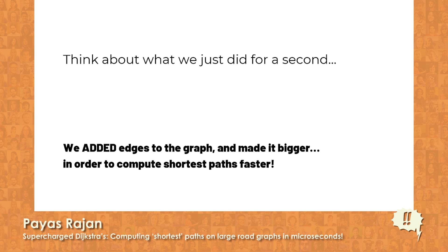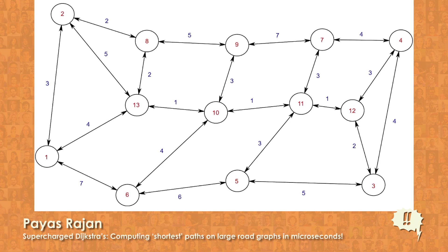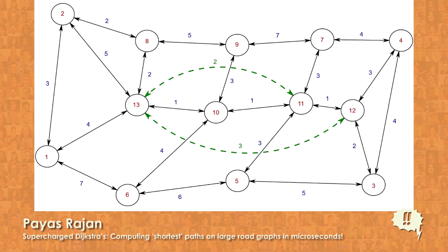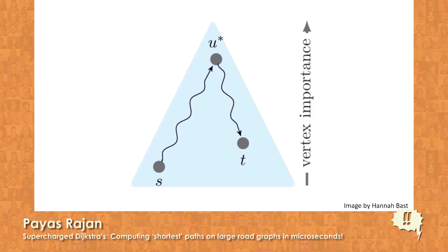We added edges to the graph and made it bigger in order to compute shortest paths faster. In our running example, the red numbers are the ranks — the order in which vertices are contracted. Running the contraction algorithm on this graph, we find that two shortcuts need to be added: one from node 11 to node 13, and another from node 12 to node 13.